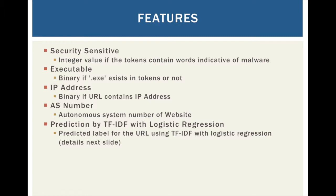Some URLs also support an IP address rather than a usual hostname. Malicious websites tend to use IP addresses instead of a hostname so they can dodge blacklists and other anti-malware techniques employed by the browser. We also look at the autonomous system number of the website. Lastly, we created the 14th feature as a pre-prediction by TF-IDF with logistic regression — an idea not covered in any other research paper about detecting malicious websites from just the URLs.